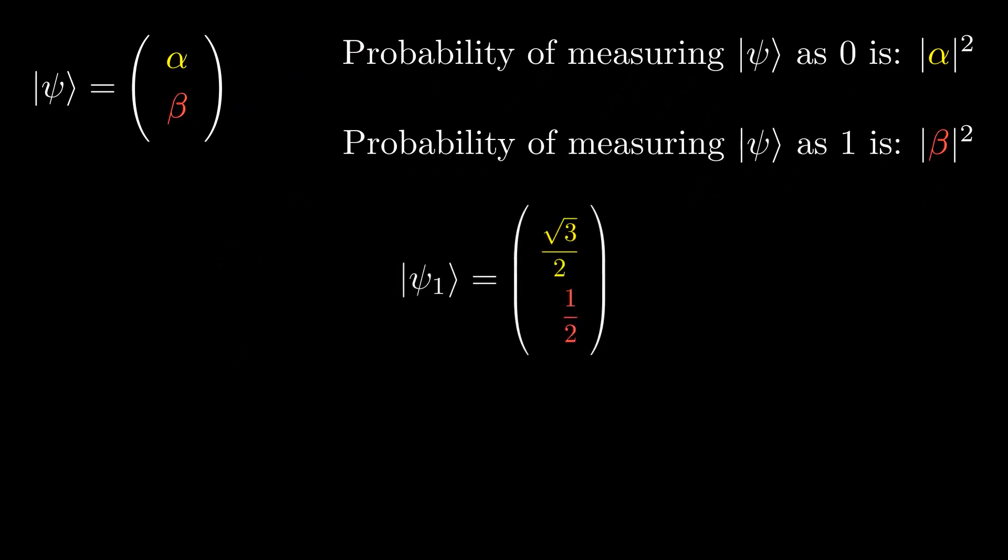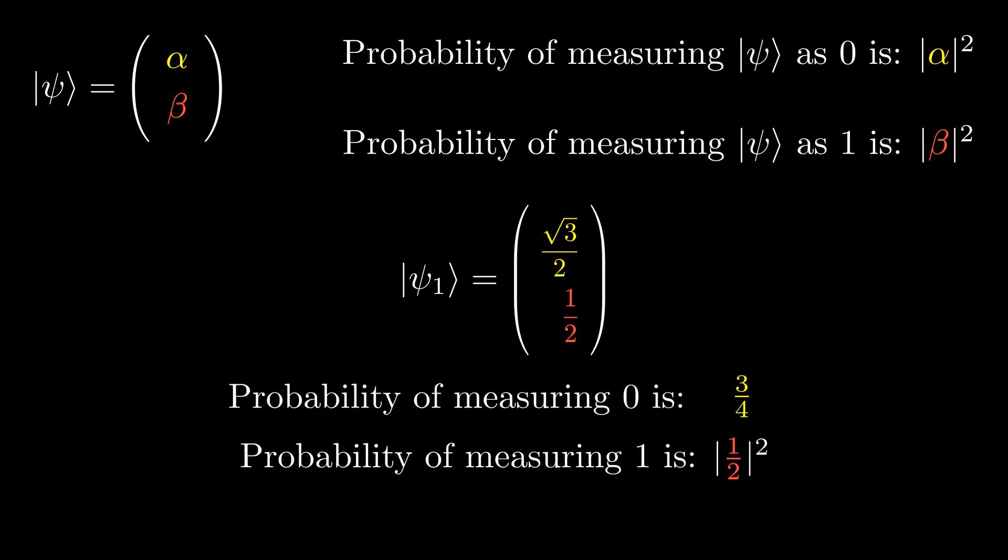So for this example qubit, when we measure it, we have a 75% chance of measuring a zero, and a 25% chance of measuring a one.